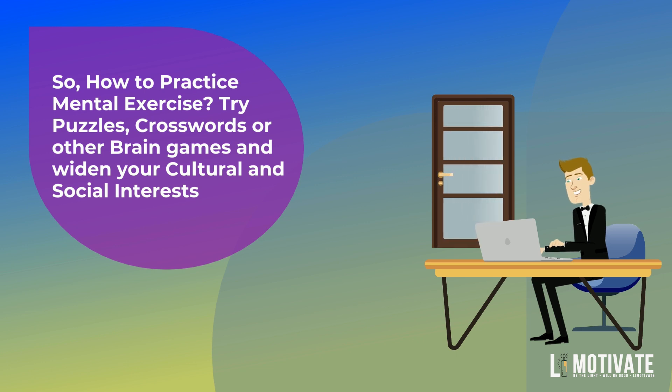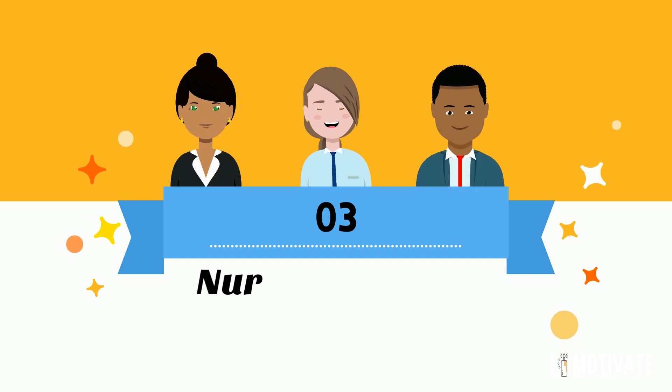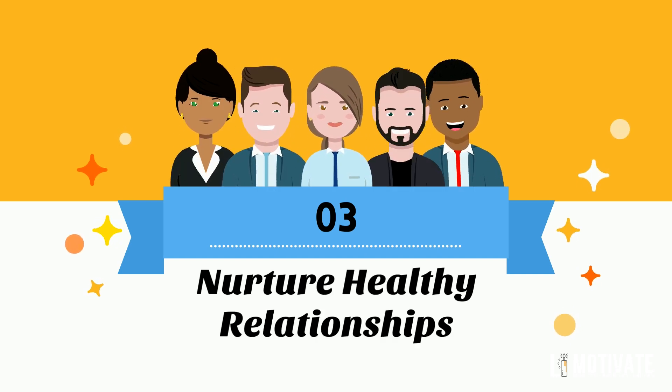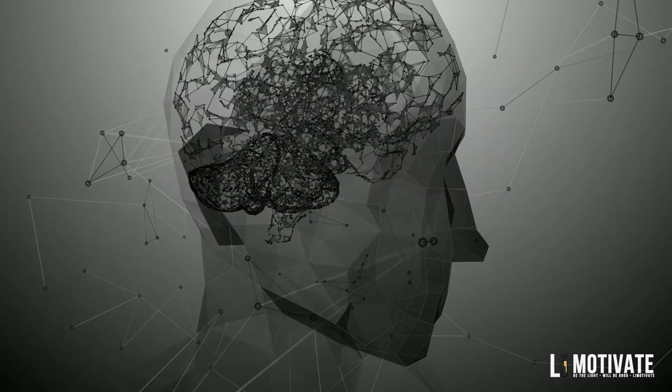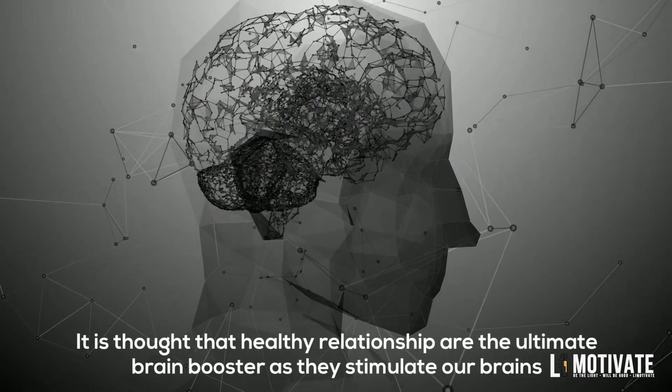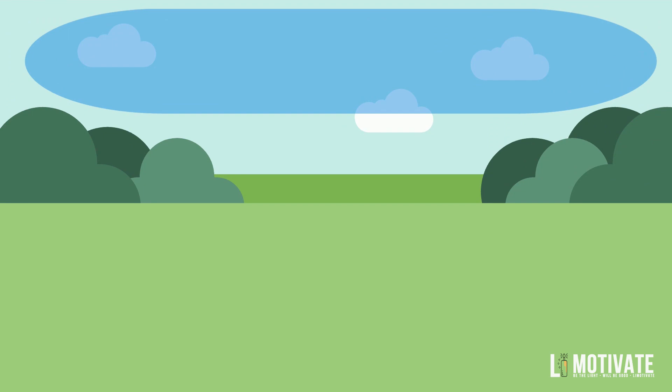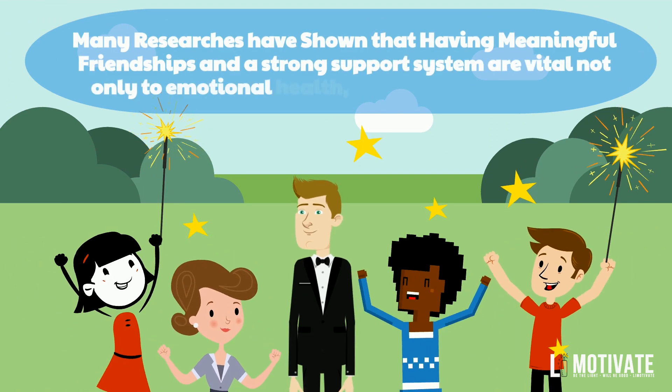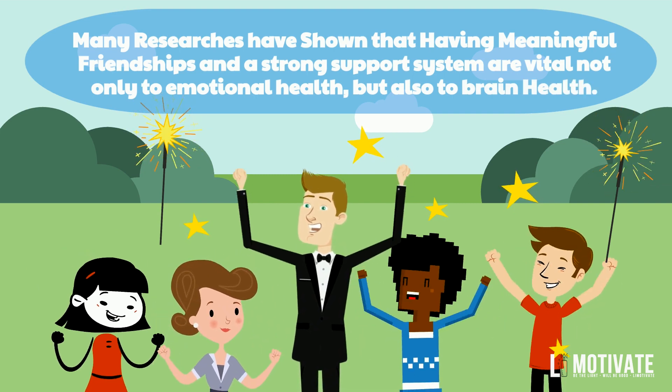Number three: Nurture healthy relationships. Although relationships are a kind of a brain exercise, we had to talk about their importance separately. It is thought that healthy relationships are the ultimate brain booster as they stimulate our brains. Many researchers have shown that having meaningful relationships and a strong support system are vital not only to emotional health but also to brain health.